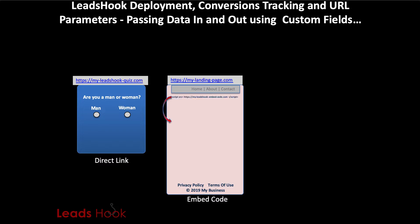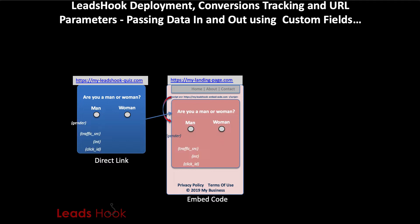Let's forget the direct link version — that's the embedded version. We have mylandingpage.com, which is your page on which you've got your decision tree embedded. For argument's sake, we want to pass gender, traffic source, interest, and click ID. These are hidden fields — gender is the field you want to capture.